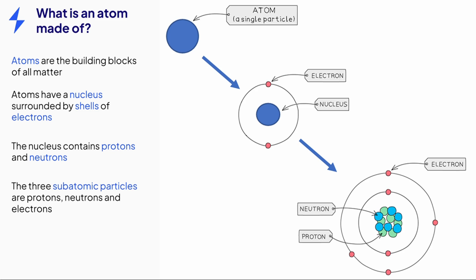Overall, an atom contains three different subatomic particles: the protons, the neutrons, and the electrons.